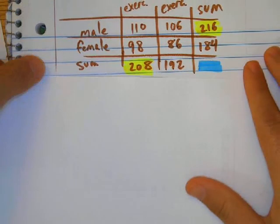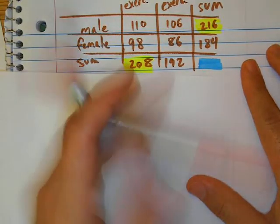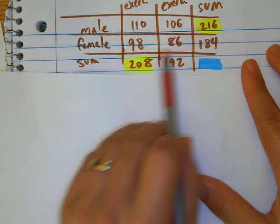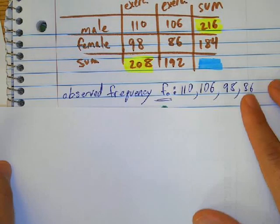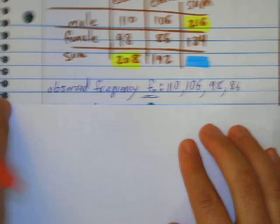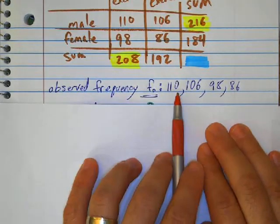So the data which you just saw in the table here, the 110, 106, 98, 86, that's considered or called observed frequencies. So this is the data that was collected.